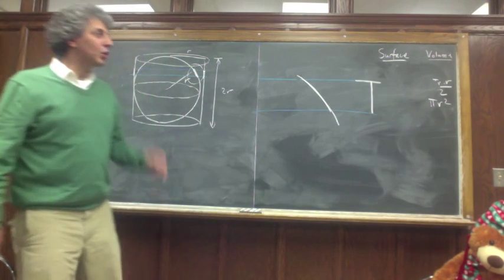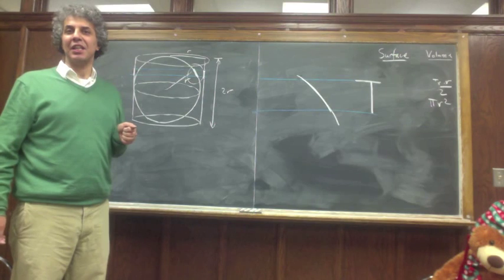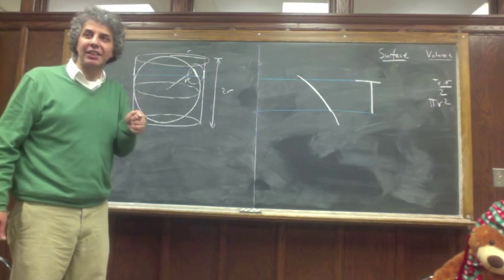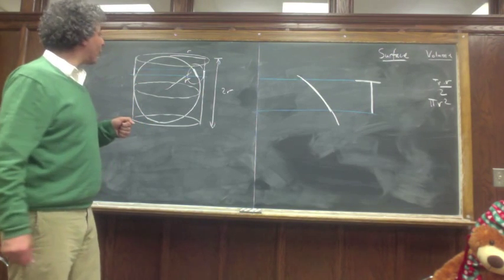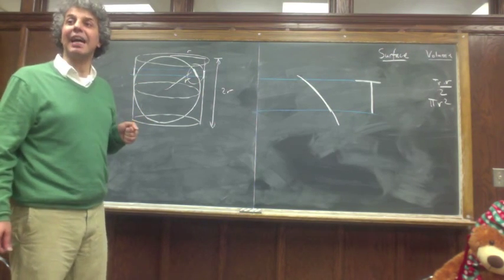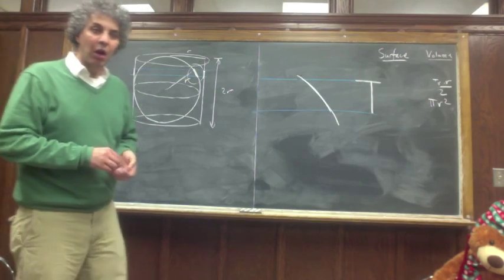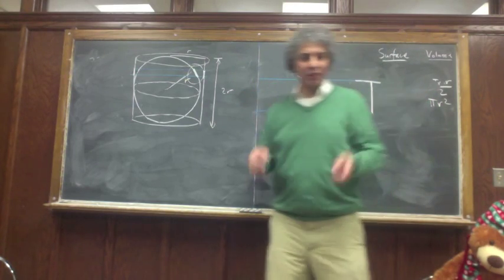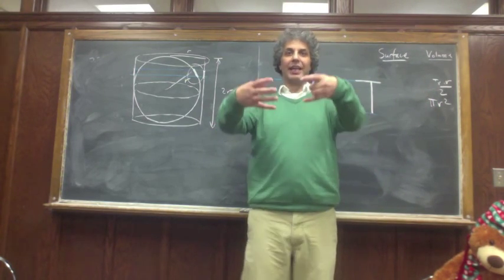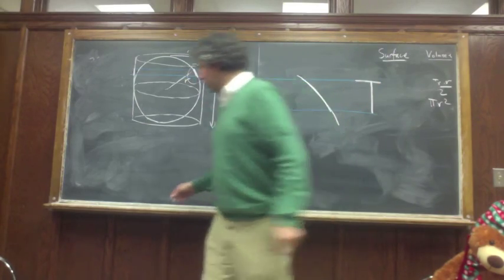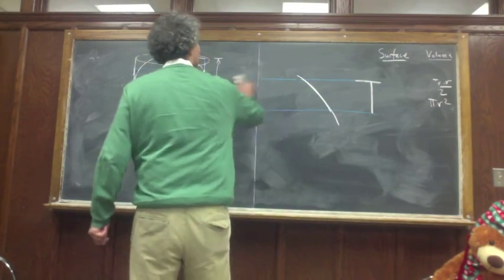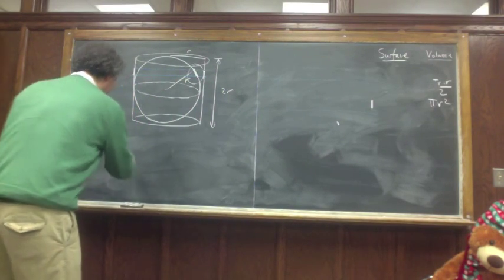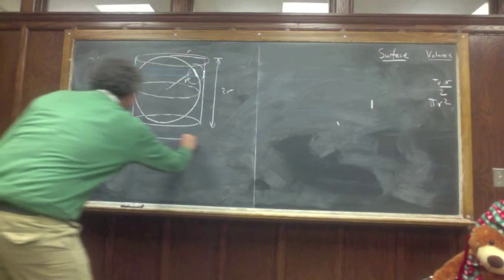So the surface area of a sphere must be identical to the side surface area of a cylinder. How can I compute the side surface area? Well, that's very simple. You take a piece of paper and unfold it. So if I unfold a cylinder, it would look like a rectangle.